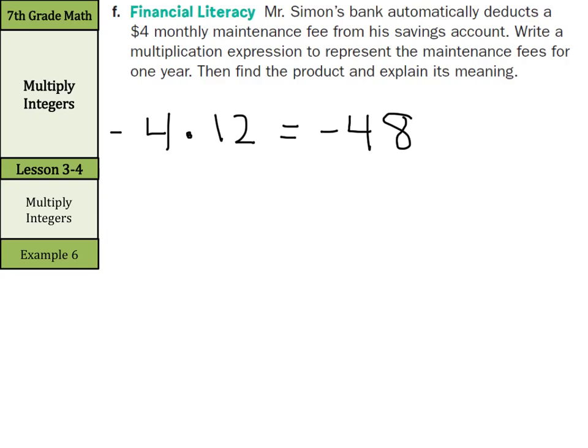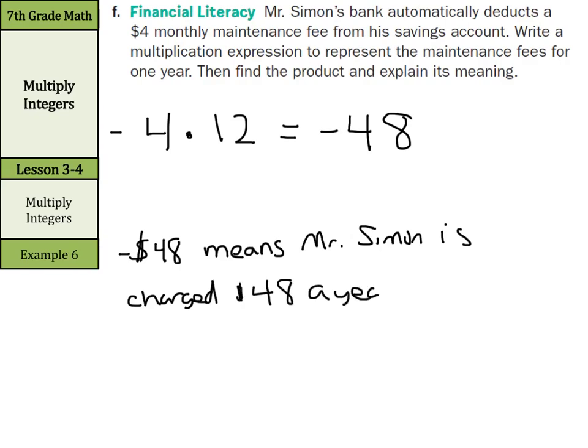In this context, negative 48 means Mr. Simon is charged $48 a year in maintenance fees. It gets removed from his account.